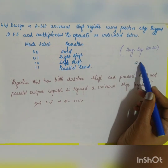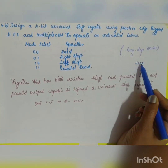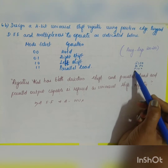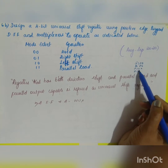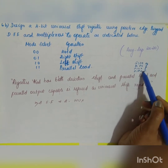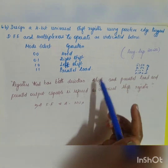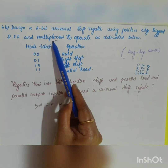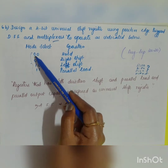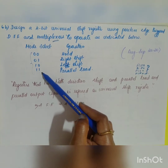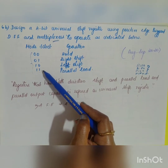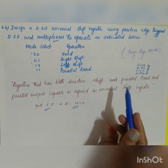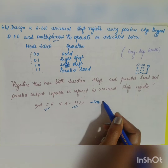A universal shift register has four options: serial in serial out, serial in parallel out, parallel in serial out, and parallel in parallel out. We have to design it using D flip-flops and multiplexers. In this problem, since there are four select options, we use four flip-flops and four multiplexers.